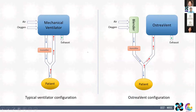Unlike commercial ventilators wherein the device is placed between the supply of air and oxygen mixture and the patient, the OSHA event is placed after the patient. Instead of directly controlling the delivery of the mixture to the patient, the OSHA event controls the exhaust air out of the system. Let me show you how this is done.